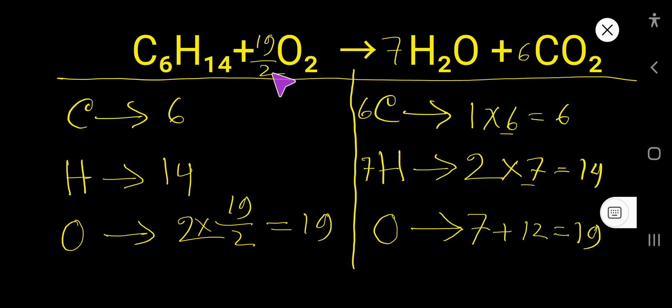So we need to multiply the whole equation by 2. Place 2 here. If you multiply 19 over 2 by 2, then you will get 19.